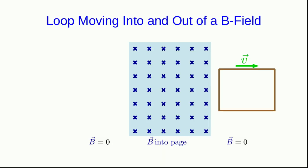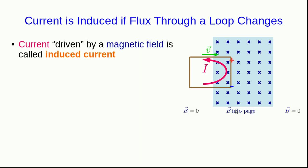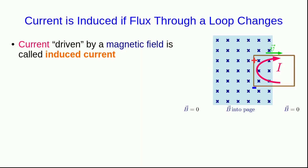And finally, the loop exits the field, and we're back to nothing going on. While I'm comparing it to situations that we could set up with batteries, these currents are a little different to think about than currents when we drive them with batteries. And so we give them a special name. We call them induced currents. So we would say that we induced a counterclockwise current in the loop as the loop was entering this region of B field, and we induced a clockwise current in the loop as it was exiting the region of the B field.